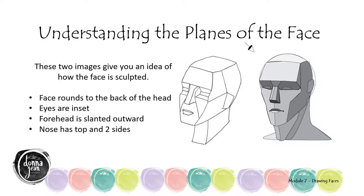In order to draw realistic faces you need to understand the planes of the face. When I say planes I'm referring to the facets of a diamond — they all turn in different directions. We've all seen a human skull so we know that the head is round, the eyes are inset into sockets, the forehead is slanted slightly backwards, and your nose actually has a top and at least two sides. It's very important to understand how those things work in relation to one another.